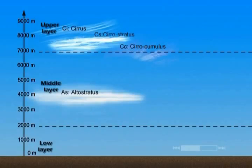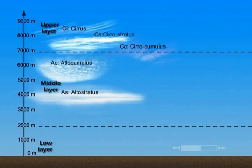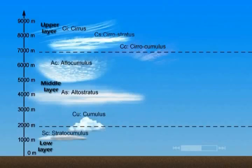Within the middle layer, we find clouds composed of water droplets called altostratus or altocumulus. Finally, we see stratocumulus and stratus clouds at the lowest altitudes.